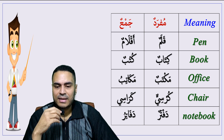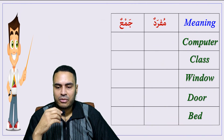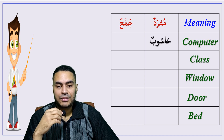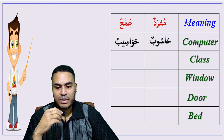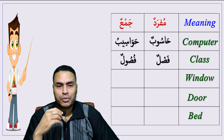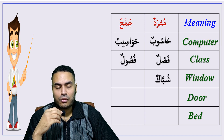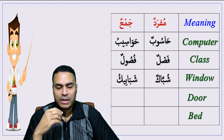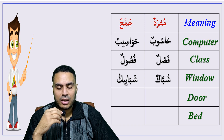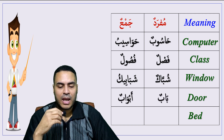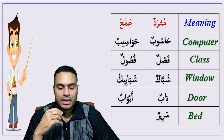Let's move on. Computer — haasibun, plural: hawasibu. Class — faslun, plural: fusulun. Window — shubbakun, plural: shababiku. Door — babun, plural: abwabun.